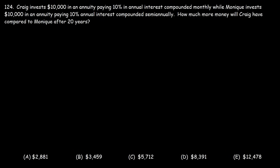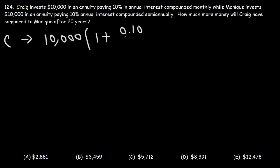Craig invests $10,000 in an annuity paying 10% annual interest compounded monthly, while Monique invests $10,000 in an annuity paying 10% annual interest compounded semi-annually. How much more money will Craig have compared to Monique after 20 years? This time we're seeing how often interest is credited in a year and whether it has a significant impact. Craig's interest rate is 10%, which is 0.10 as a decimal, and it's compounded monthly, so N is 12. He's going to invest for a total time of 20 years.